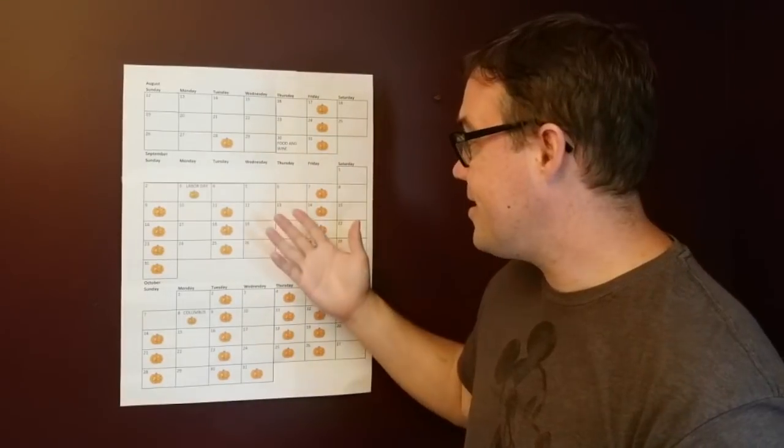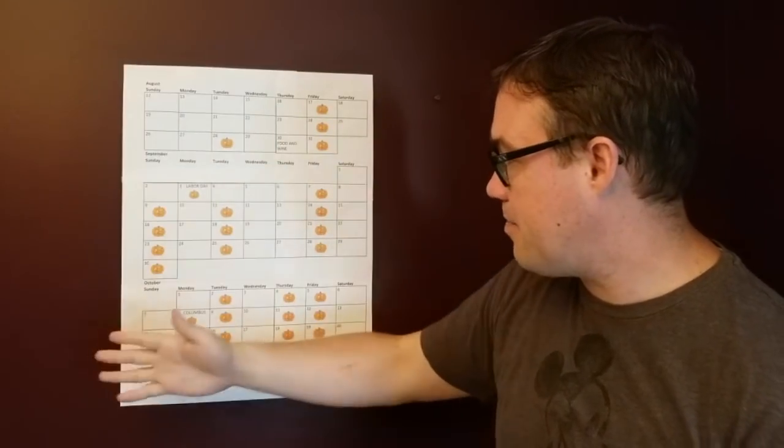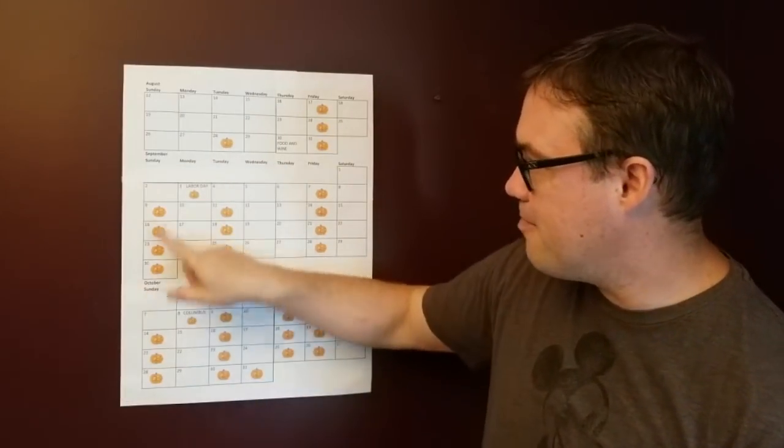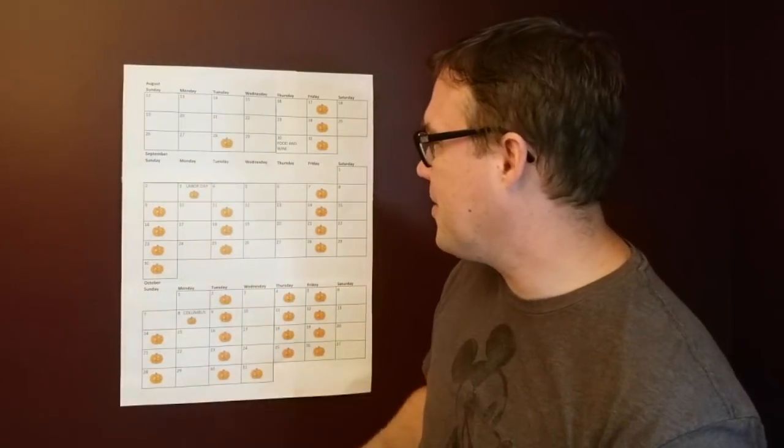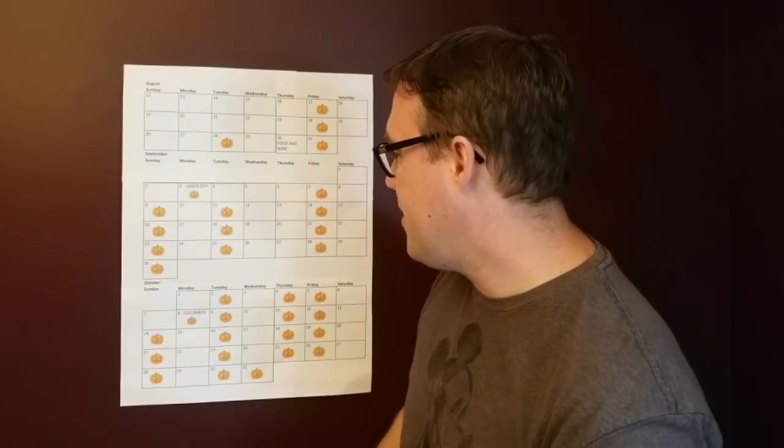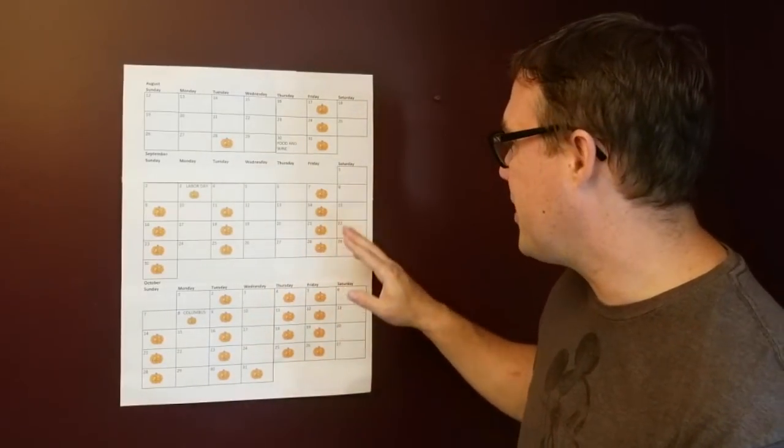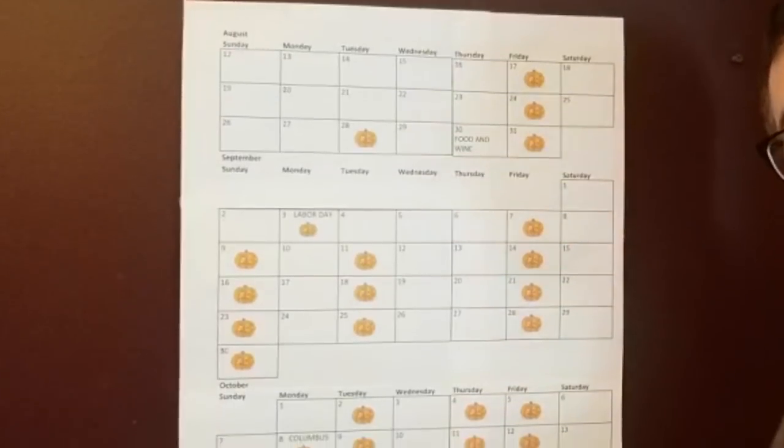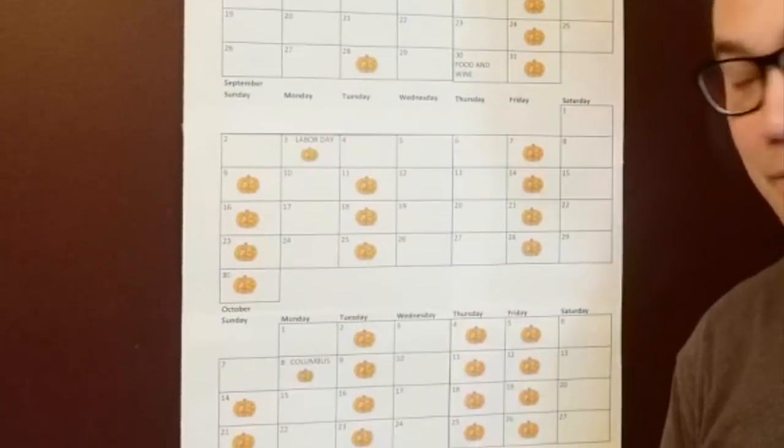They only allow a certain number of people into the Magic Kingdom for the parties, that is why they can sell out. Obviously, as you can see this is August, September, October. I didn't write the month descriptions very large, but I'm sure you can figure it out. As you've probably already guessed, the pumpkins are where the Halloween parties are, and yes there are a lot of them, especially in October.